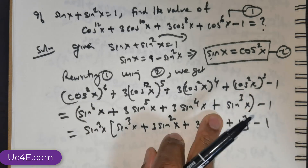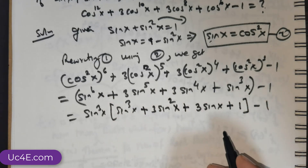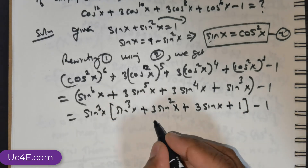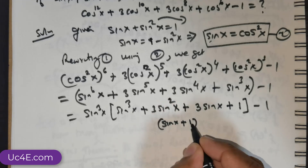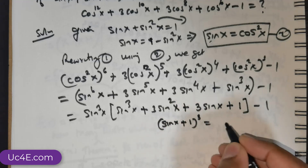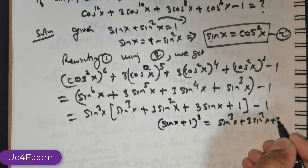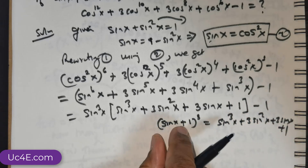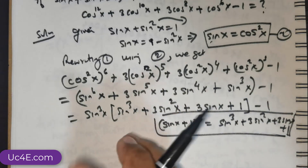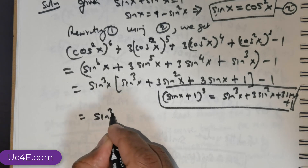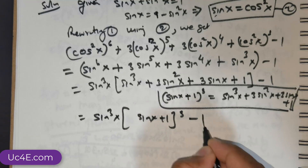I am taking sin³x common from these terms, leaving the −1 out. Now, is this not similar to (sin x + 1)³? Expanding (sin x + 1)³ gives sin³x + 3 sin²x + 3 sin x + 1. Yes, it is. So using this formula, we get (sin x + 1)³ − 1.